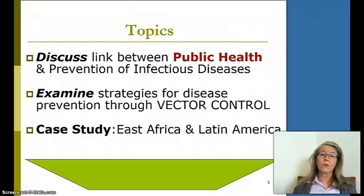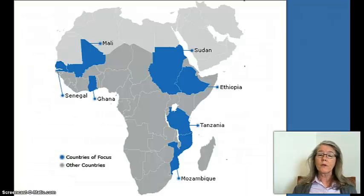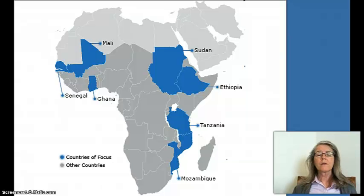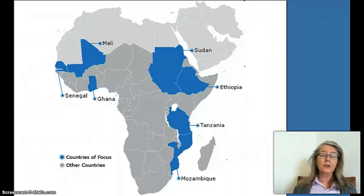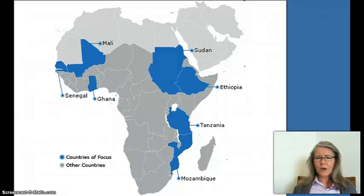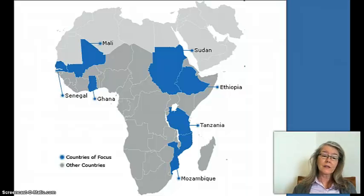Latin America also has several vector-borne infectious diseases. When we're looking at Africa, funding is made available for what are called neglected tropical diseases — diseases that tend to be more rare, sometimes only a handful of cases. Because there are so few cases and the infections typically occur in sub-Saharan Africa, there is unfortunately very little investment in research on curative treatments.